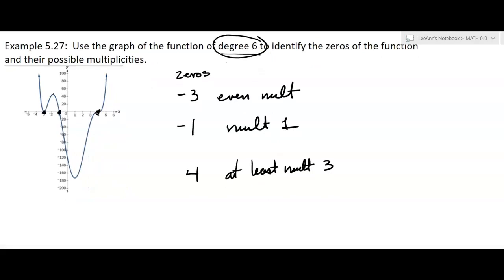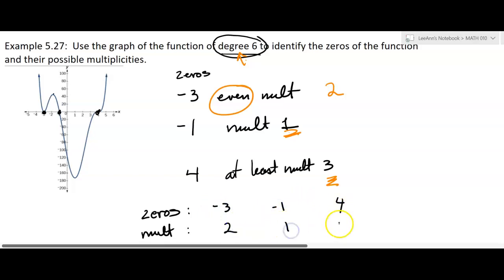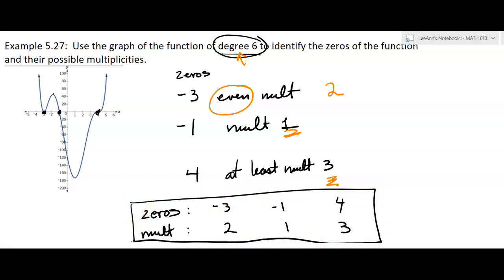So we know we have a multiplicity here of 3. We know we have a 1 here, so that's 4 already. We only have a degree 6, and we know that this has to be even, so it must have a multiplicity of 2. So if I wanted to write it a little bit better, maybe I could make a chart. My zeros and their multiplicities. So the zeros are negative 3, negative 1, and 4. The multiplicities have to be 2, 1, and 3. You can't have it higher because then you would have too high of a degree for the polynomial when they told us it was degree 6.